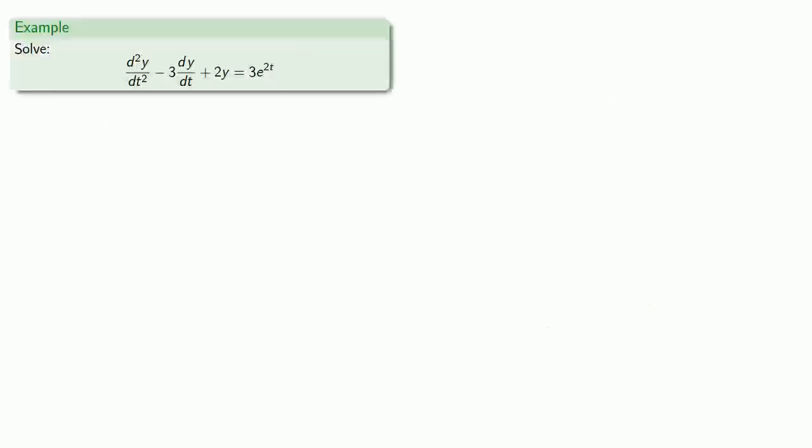For example, let's try to solve this differential equation. In operator notation, our differential equation becomes (D² - 3D + 2)y = 3e^(2t). Now if the right-hand side were zero, we'd have a nice homogeneous equation. But it's not.